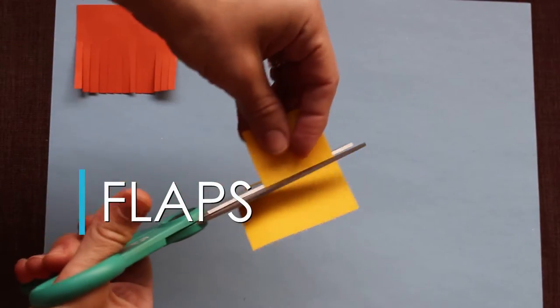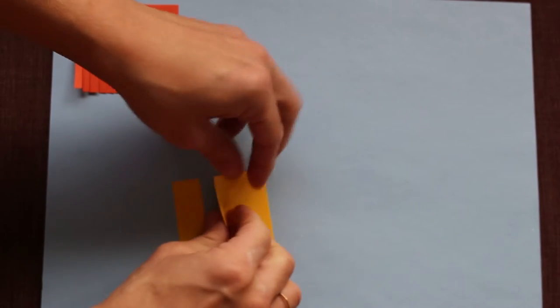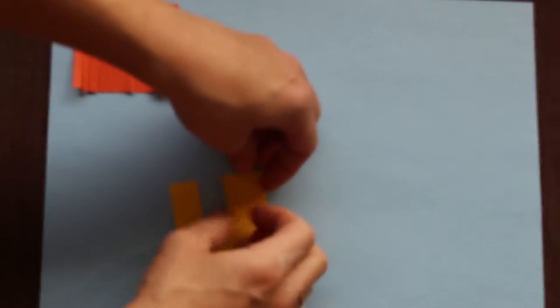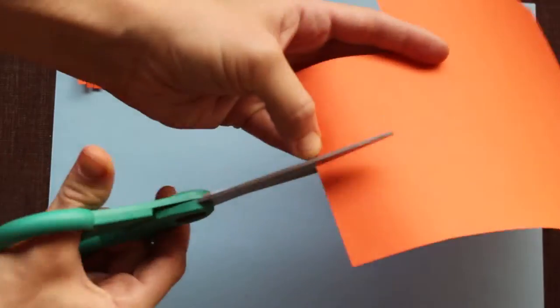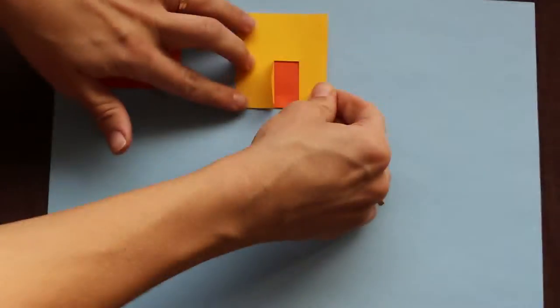Technique two, flaps. This technique is perfect for doors and windows. Cut an L-shape into your paper and fold the paper back. For extra detail, you can glue a square in a different color behind the flap paper.